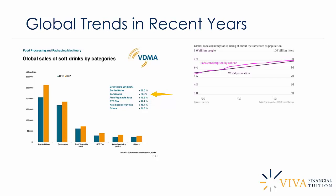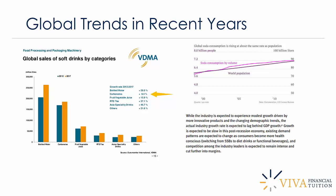Soda consumption — another word for carbonated soft drinks — is rising at about the same rate as world population, so we're not seeing particularly spectacular growth there. It's tracking world population growth, which is not very outstanding. But the carbonated soft drinks market is the most mature and in absolute numbers the largest, so more modest growth figures in that segment are perhaps not surprising.